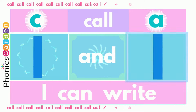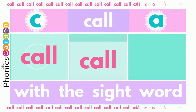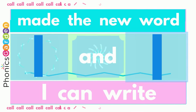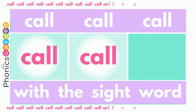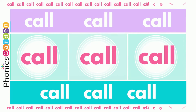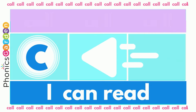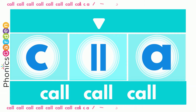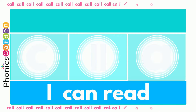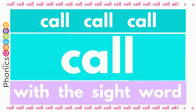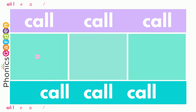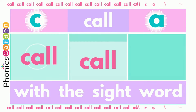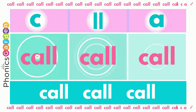C, G, L, and L — call, call. Now you've made the new word — call, call, call. Use a C, use an A, end it with L, L. Now you've made the new word — call, call. C, G, L, and L — call, call.